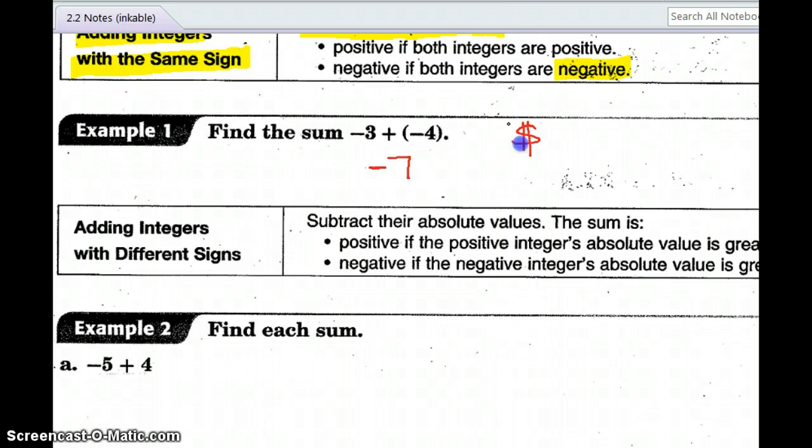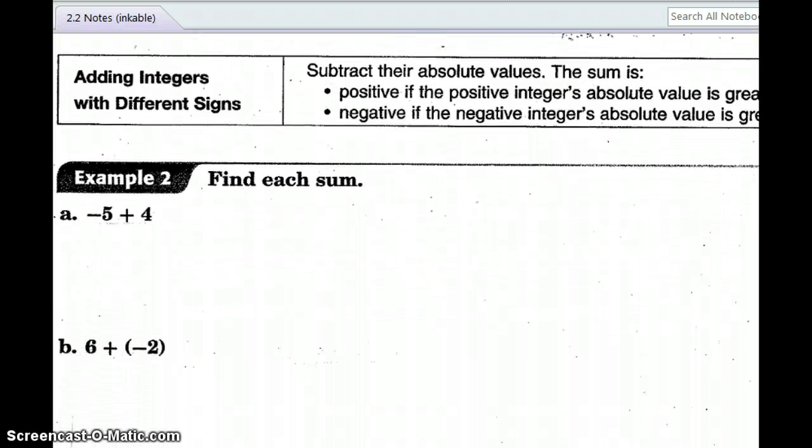If you think about money, I owe somebody three dollars. Uh-oh, I had to borrow four more dollars. I am negative, or I owe them seven dollars. So you're going to add the numbers, but keep the negative. So that's when we're adding integers with the same sign.